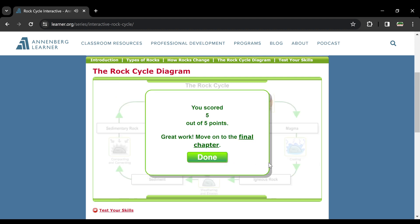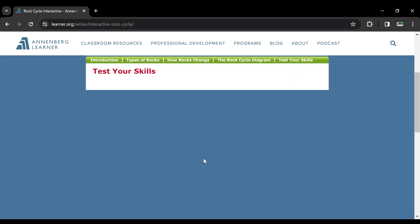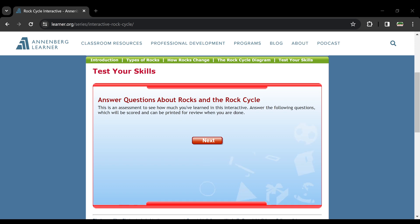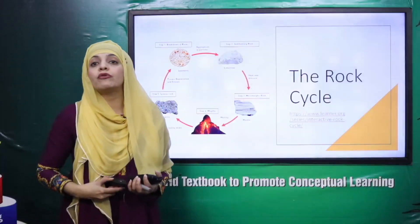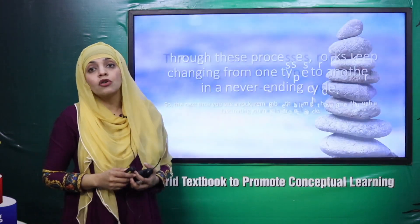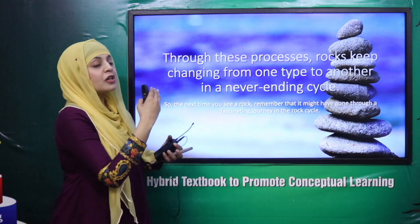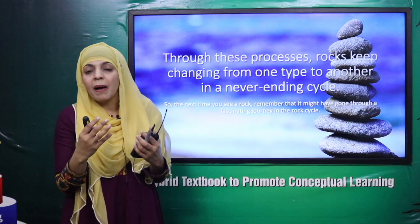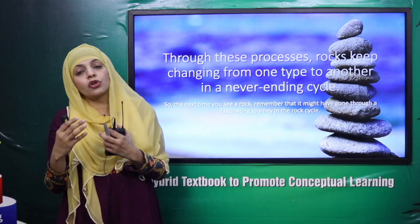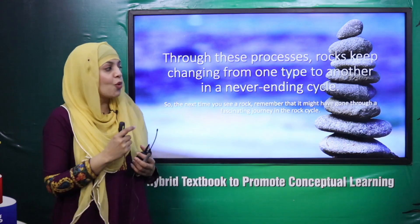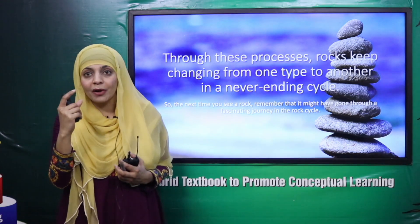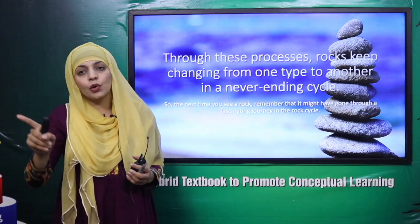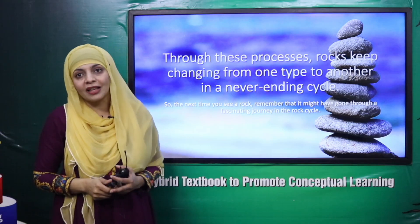So aap dekhe, is tariqe se hamare paas ye cycle jo hai woh complete ho gaya. Now let's quickly move back towards our presentation. Aapne dekha ke kis tariqe se ek rock jo hai woh doosre rock mein transform ho raha tha in our rock cycle — different types of rocks, weathering erosion, heat and pressure, ya magma ki cooling and solidification se ek rock doosre rock mein transform ho jata hai. So next time if you hold a rock, just remember — ke ho sakta hai ke ye millions and trillions of years ago pehle ka rock ho, kyunki yahi cycle jo hai, ye continuously earth ki existence se chalta aa raha hai.